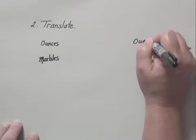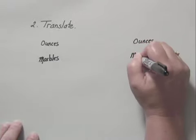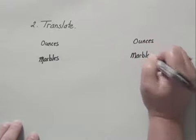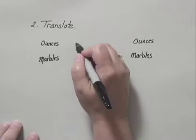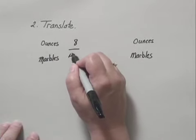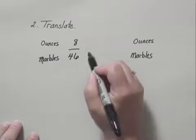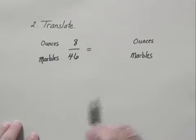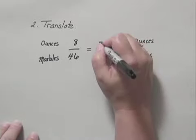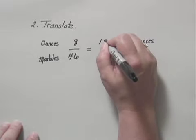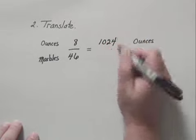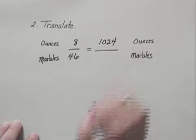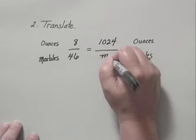I'm going to write that on both sides to make sure I get this done correctly. Now Nancy went home and filled an 8-ounce jar with 46 marbles. To get the same ratio, she should have M marbles in a 1024-ounce jar. That's the 8-gallon jar, 1024 ounces to M marbles.